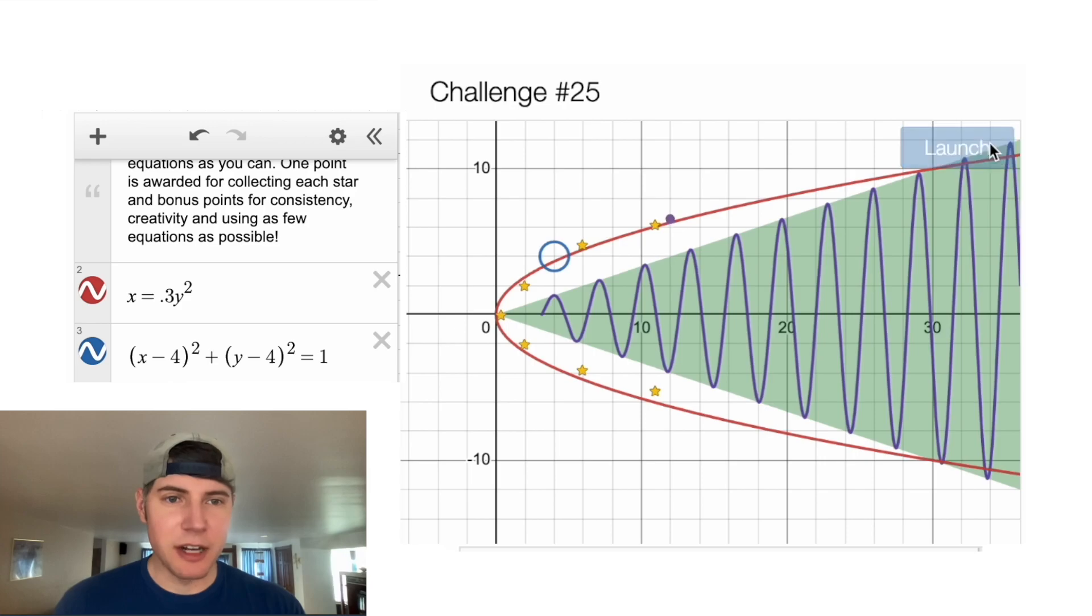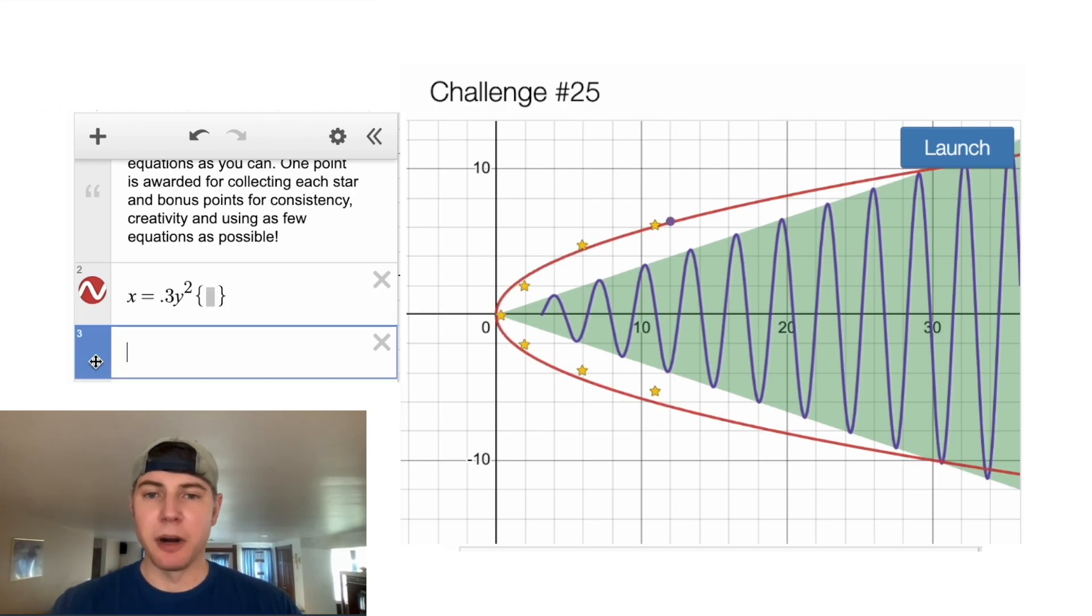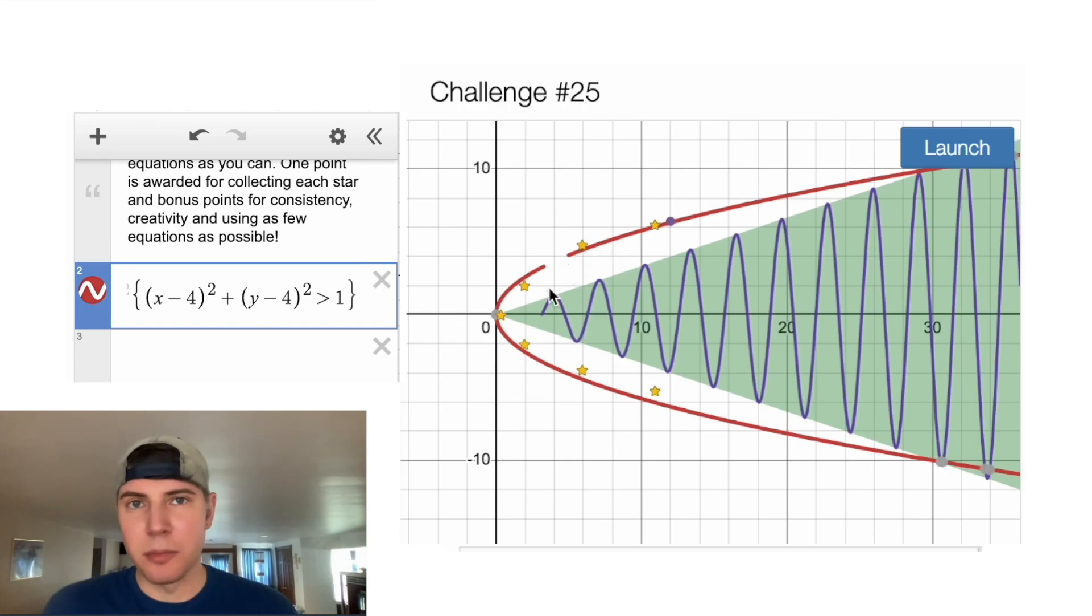So obviously, if we hit launch right now, it's just going to get stuck on that circle. There is a way to use this blue circle to take a bite out of this red parabola. If we use squiggle brackets, insert the circle into the squiggle brackets, and then if we make this greater than, it's going to include everything outside of the circle. And then everything inside of the circle gets cut. So that's what makes our bite.